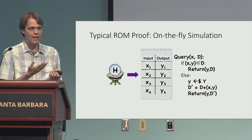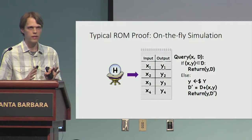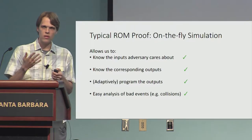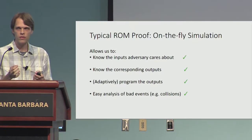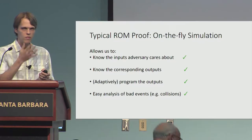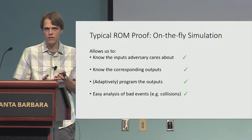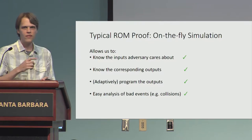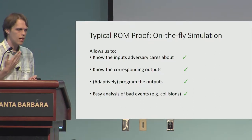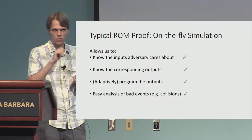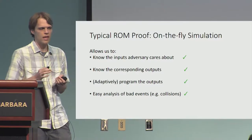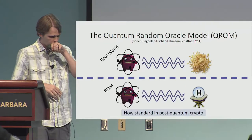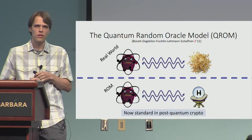Every time the adversary makes a query, we just sample the output of the oracle for that input at that given point and leave all the parts the adversary hasn't queried yet undefined. What results is a database of input-output pairs that the adversary sees. By looking at this database, we know what inputs the adversary cares about — they're just the inputs in the database — we know the corresponding outputs, we can adaptively program the outputs, and we can also very easily analyze bad events such as whether the adversary is able to find a collision.